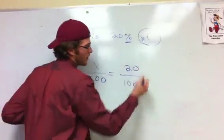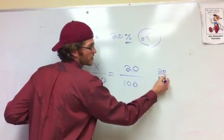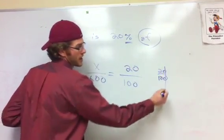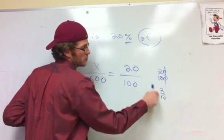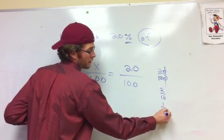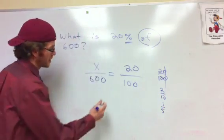20 over 100, right away I see the 20 over 100, that these zeros can cancel, and then we have 2 over 10, and then 2 goes into 10 five times, so it becomes 1 over 5. Does everybody agree? Yes.